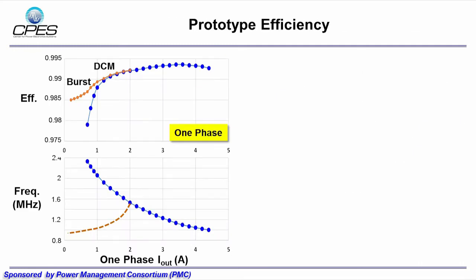This is the one phase module efficiency. The bottom curve is the corresponding switching frequency. DCM and burst operation is adopted to improve the light load efficiency.